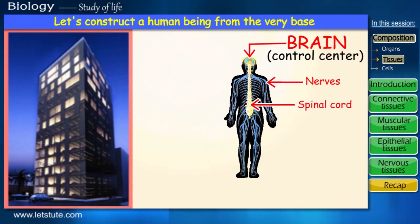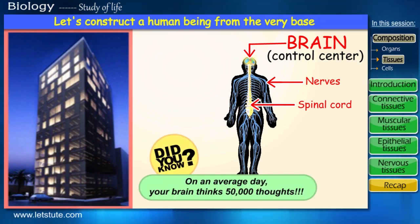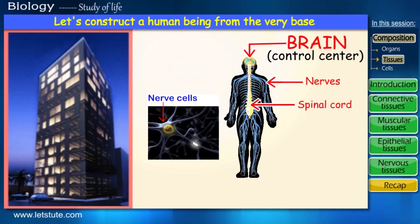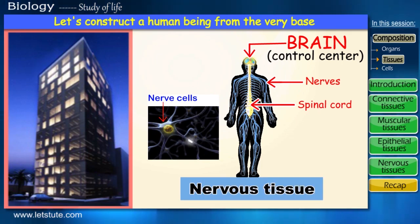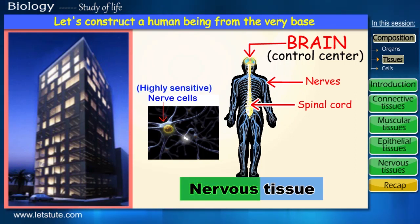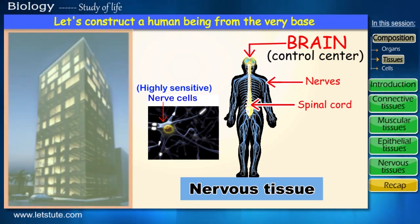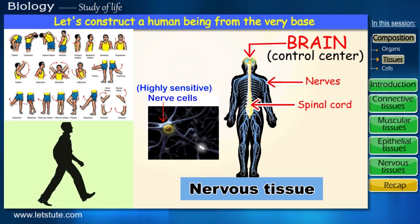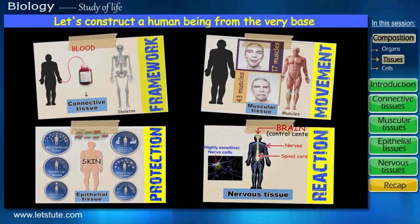The brain and spinal cord are also made up of millions of nerve cells, which are responsible for storing memories, information, and habits learned from young. Did you know that on an average day your brain thinks around 50,000 thoughts? Since our nerve fibers, spinal cord, and brain are all made up of nerve cells, the tissues that form these organs are called nervous tissue — nervous because these cells are highly sensitive and can be excited. Most importantly, it is these nerve impulses that allow us to move our muscles in response to a particular situation, enabling swift body movements. Thus, our body is now complete.